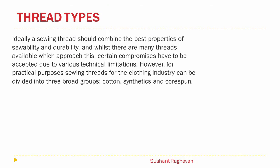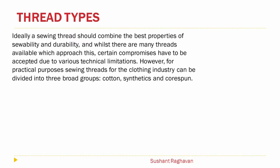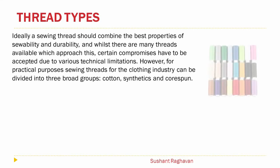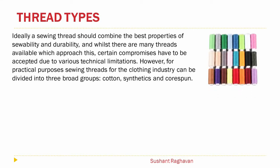Thread types. Ideally, a sewing thread should combine the best properties of sewability and durability. Whilst there are many threads available which approach this, certain compromises have to be accepted due to various technical limitations. For practical purposes, sewing threads for the clothing industry can be divided into three broad groups: cotton, synthetics, and core spun.